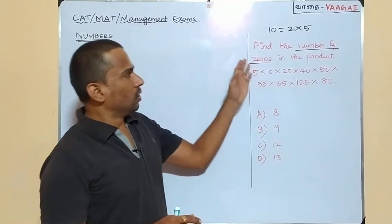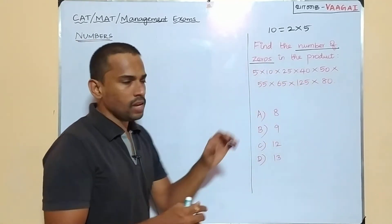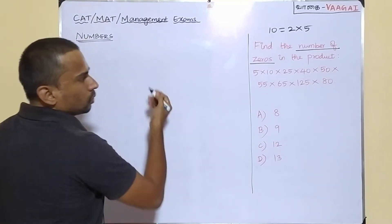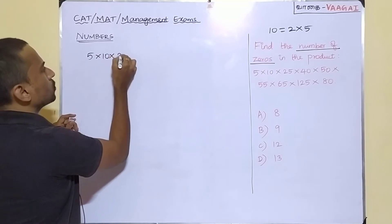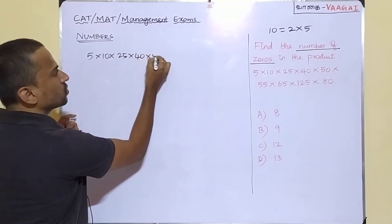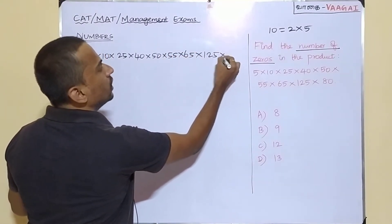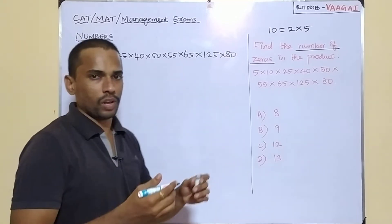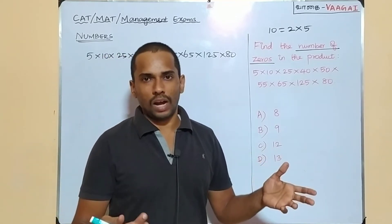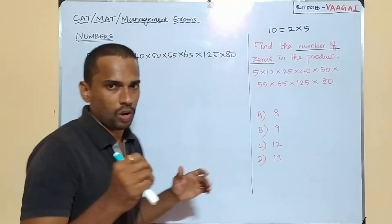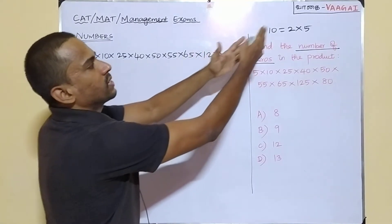Coming to the question, find the number of zeros in the given product. Our product is appearing to be a little lengthy. The product given here is 5 into 10 times 25 times 40 times 50 multiplied by 55 into 65 into 125 into 80. So of course, a very long product we have here. For this product, this will have how many zeros at the end?